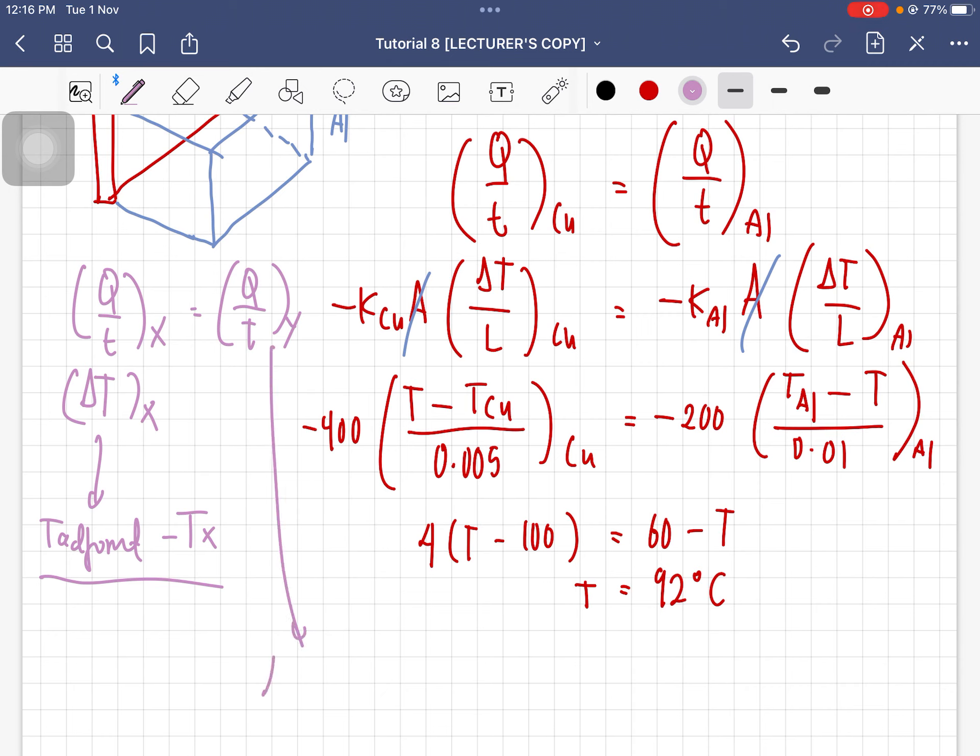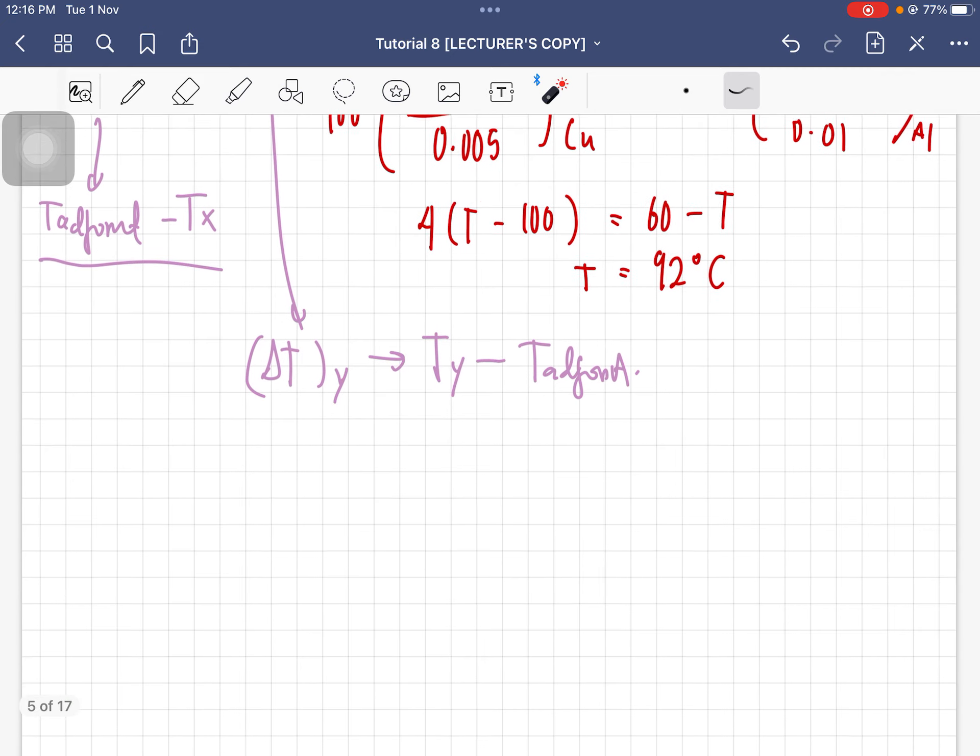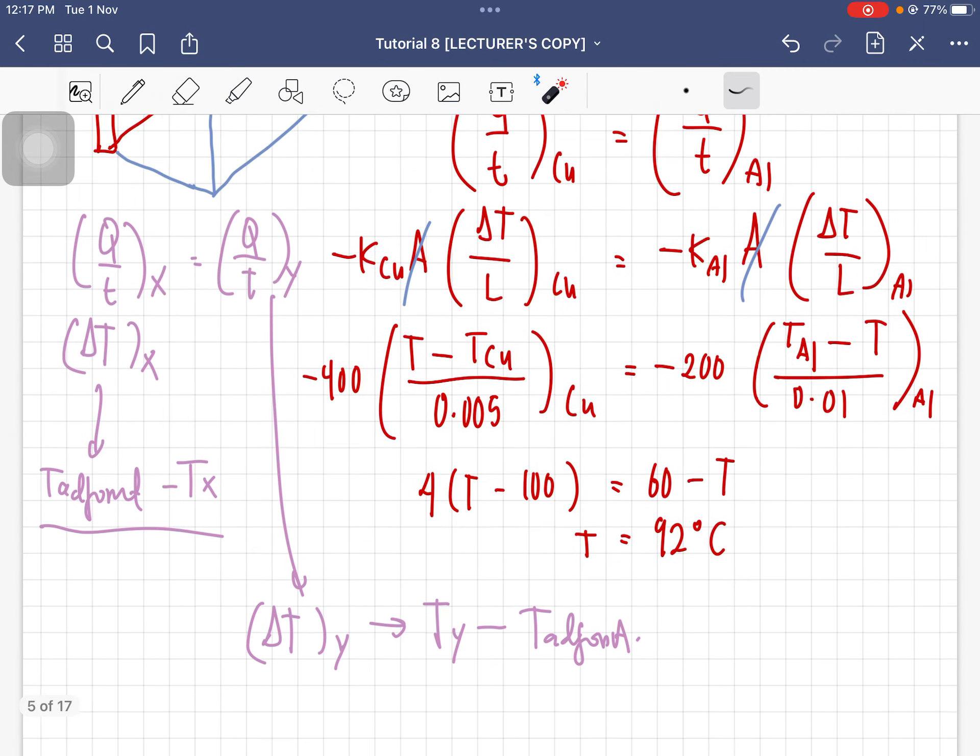And then for this one, delta T is the outside temperature of the second material minus the adjoined material. So that's why the formula is like that. Let's continue to question B.